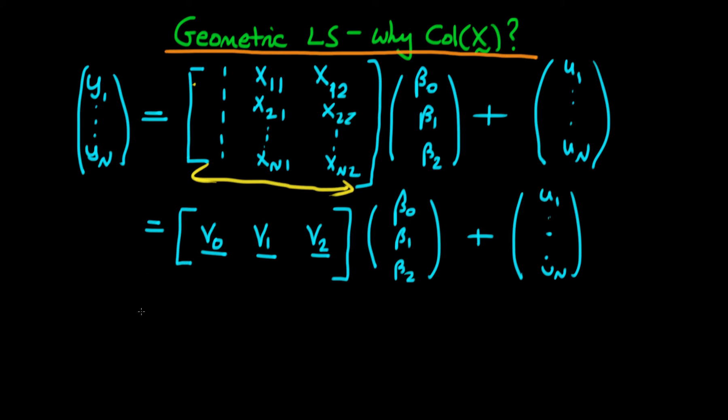Now, if I expand this out, we can just do it as if we're multiplying two vectors. The first component is just going to be v0 times beta 0, the second one v1 times beta 1, and then v2 times beta 2. So if I write that out in full, we've got beta 0 v0 plus beta 1 v1 plus beta 2 times v2, and then finally we've got our error vector u.